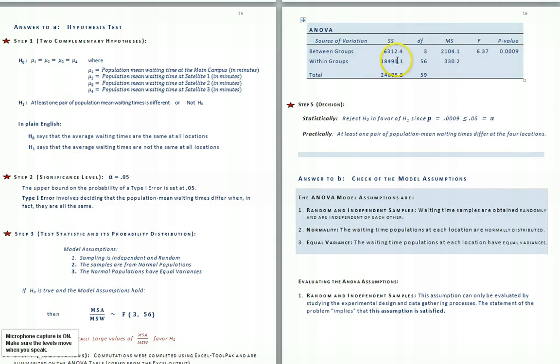The MSW number that appears within this square root is obtained from the ANOVA table on the Excel output. We can get it off of here. The MSW number, here's the within groups variation, and here's the MS column. So the MSW number we'll be using is 330.2.